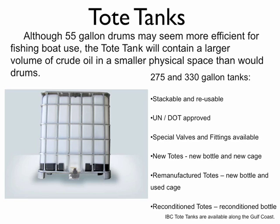Each boat would carry tote tanks for temporary storage of oil. Because 55-gallon drums are cylindrical, they do not make as effective use of physical space on the boats as do regular tote tanks. Tote tanks will contain a larger volume of crude oil in a smaller physical space than oil drums. Also, since tote tanks have a bottom spigot, the little amount of water collected during Elastal oil pickup can be drained off of the tank.